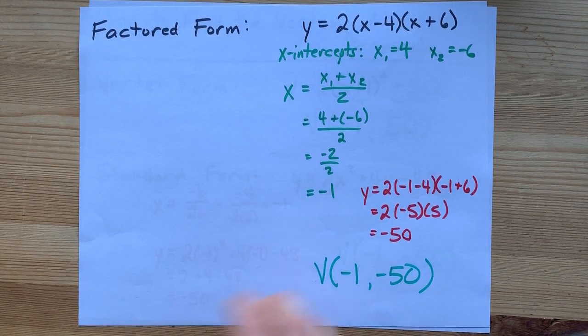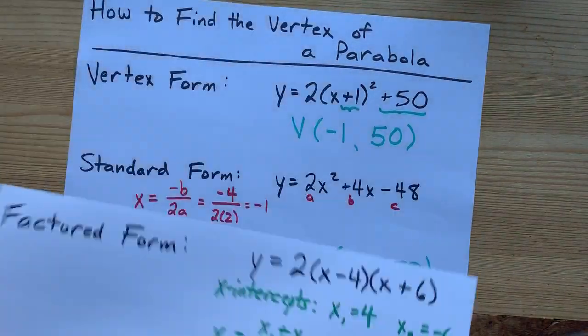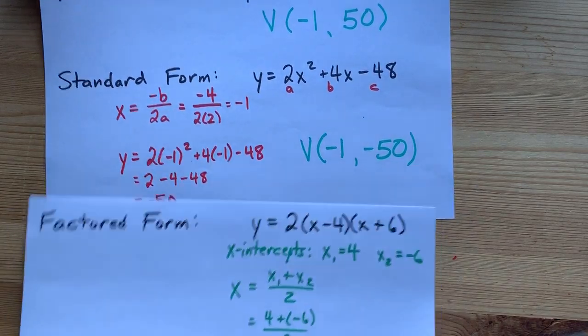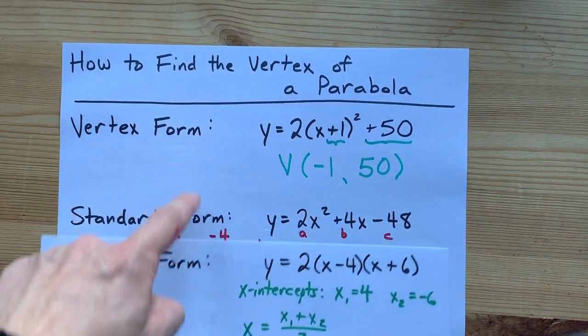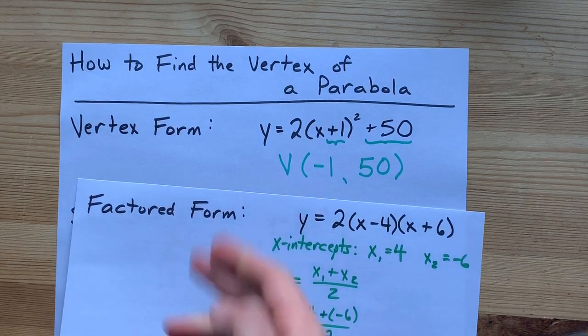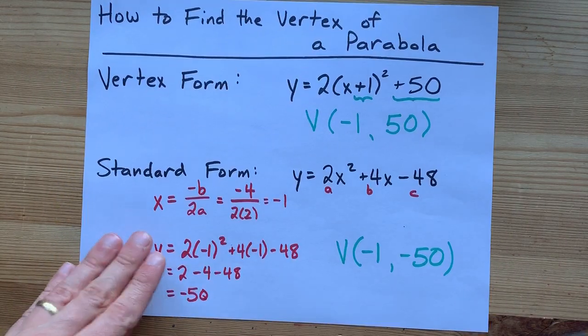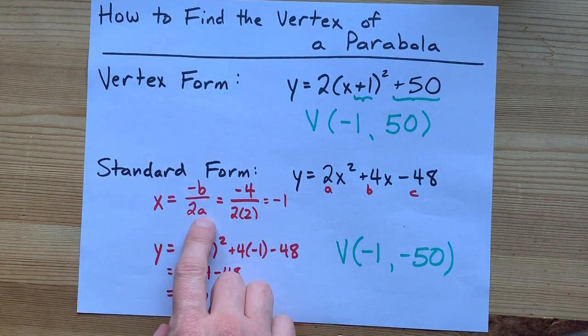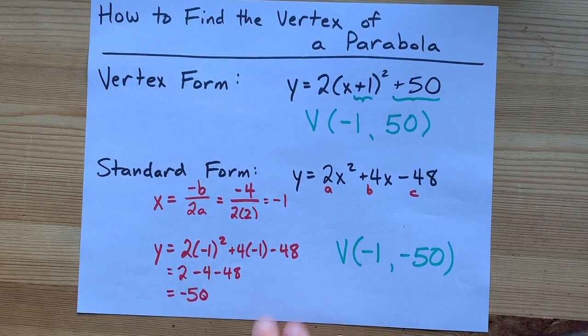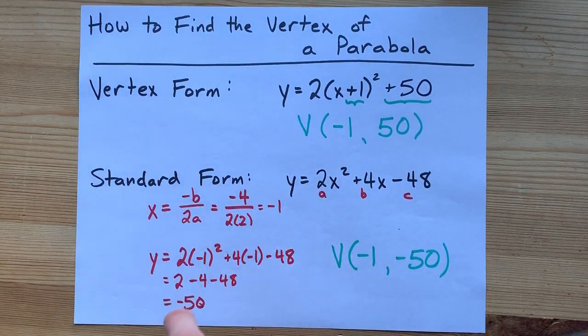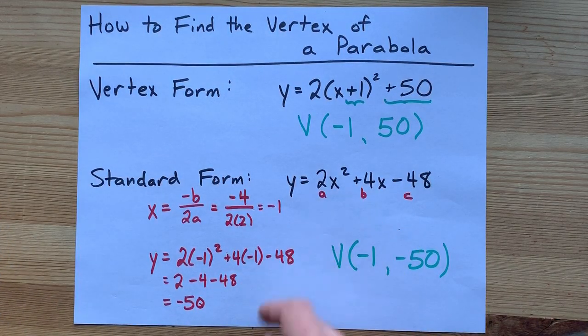So look at that. I got almost the same vertex for all of them, even though they looked very different. That's not the point, though. The point is you have to know what form you're in before you find the vertex. Vertex form, easy peasy, lemon squeezy. Standard form, also pretty easy if you know this shortcut for the axis of symmetry. Some teachers want you to complete the square. If your teacher wants that, go find another video.